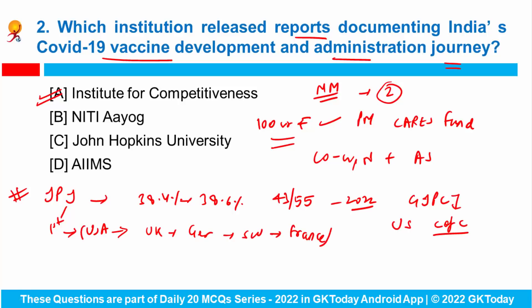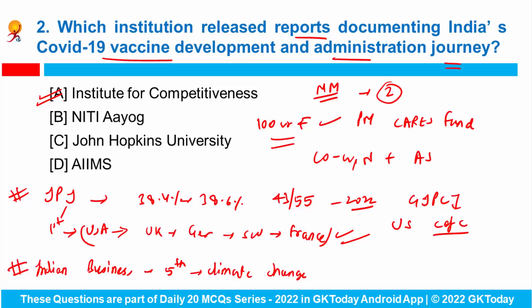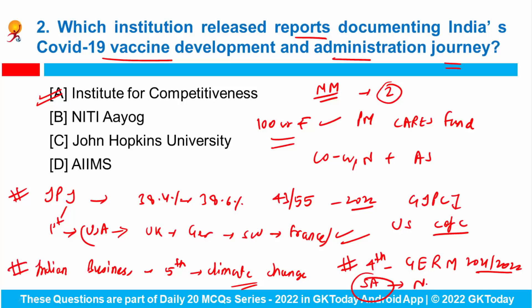Apart from it, Indian business ranks fifth in their concern for climate change, and this report examines business leaders' and companies' concerns and actions related to climate change and sustainability. Also, India ranks fourth in the Global Entrepreneurship Monitor Report 2021-22. The top country was Saudi Arabia, followed by Netherlands, and Sweden at third place.